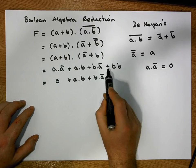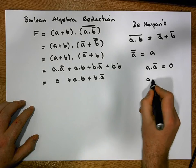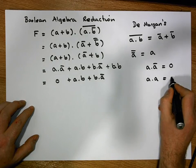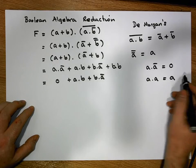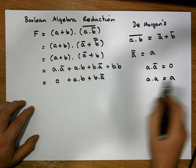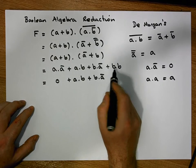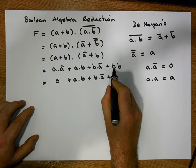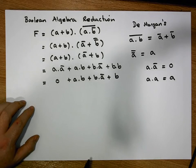We also know that B AND B equals B — this is called the idempotent law, a key identity typically given in assessments. So the expanded expression now becomes (A AND B) OR (B AND Ā) OR B.